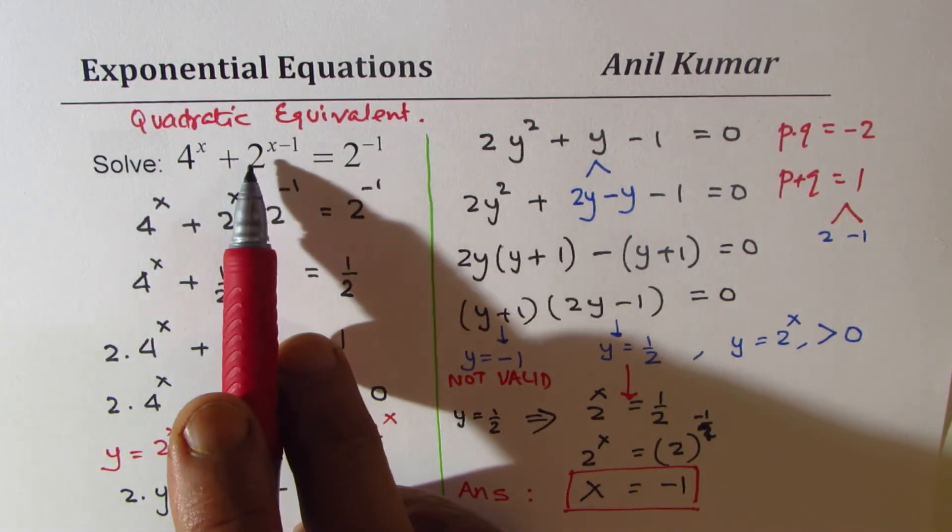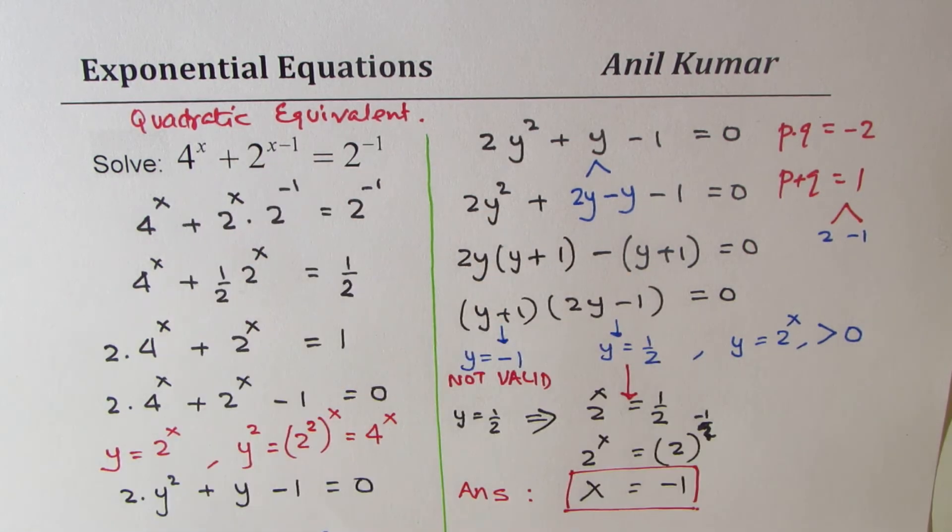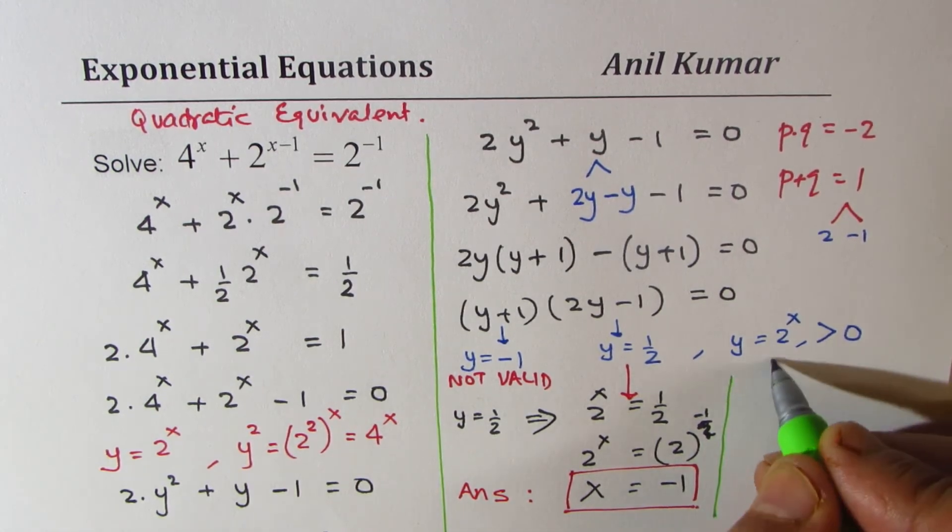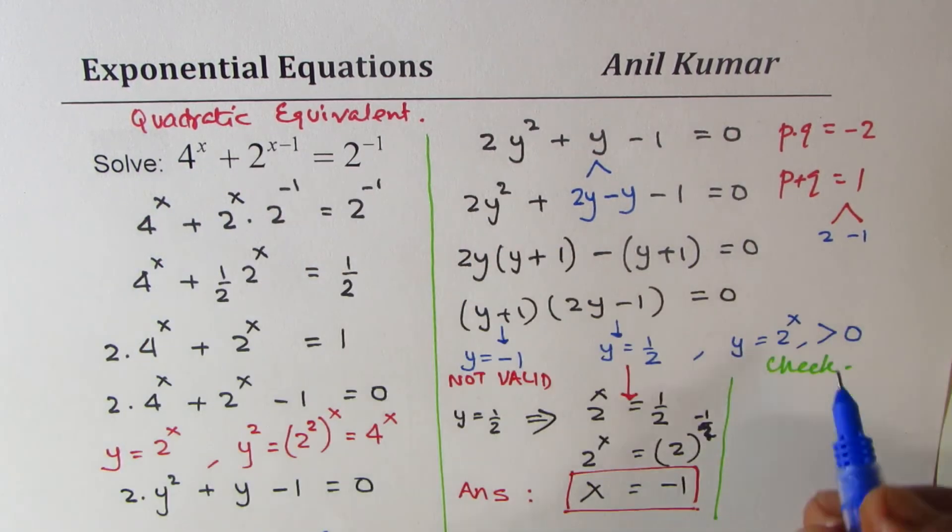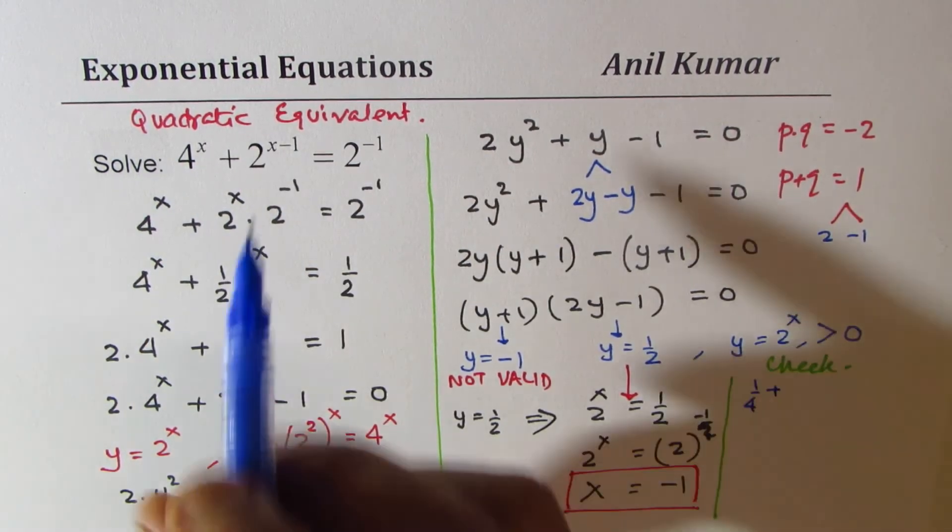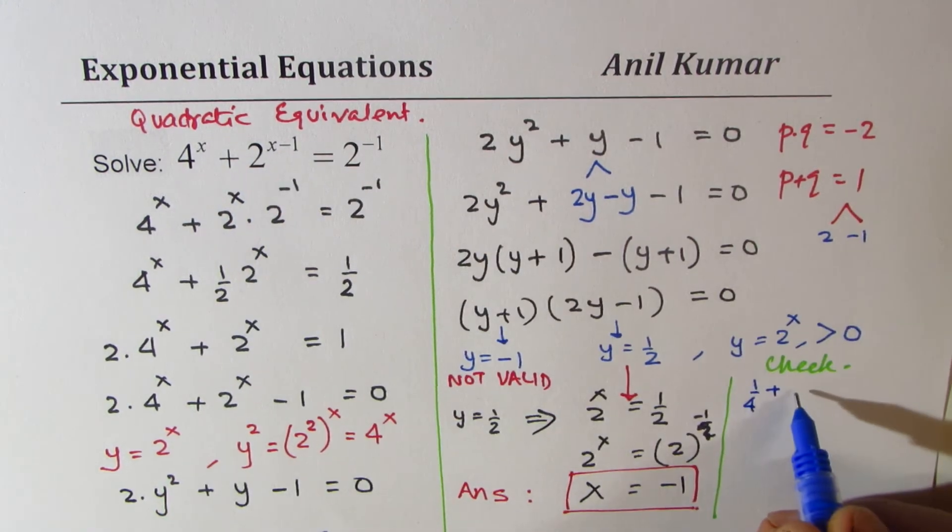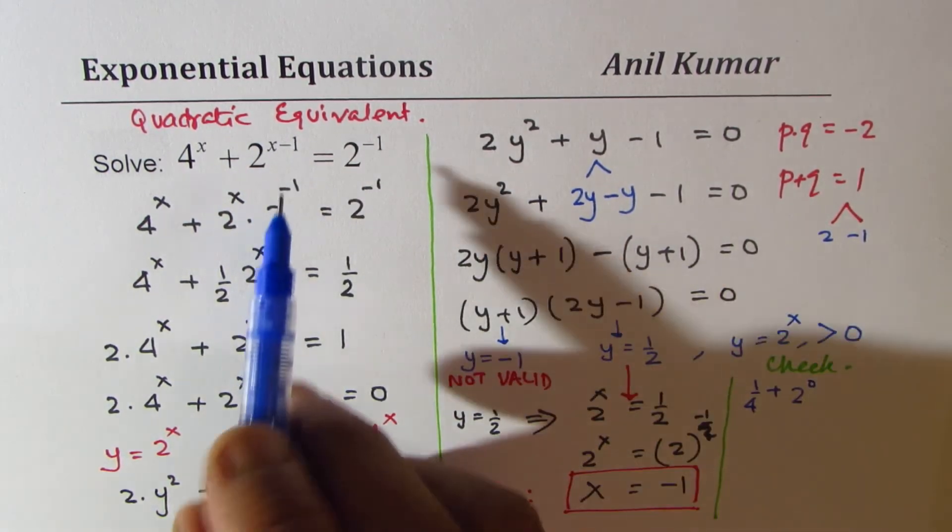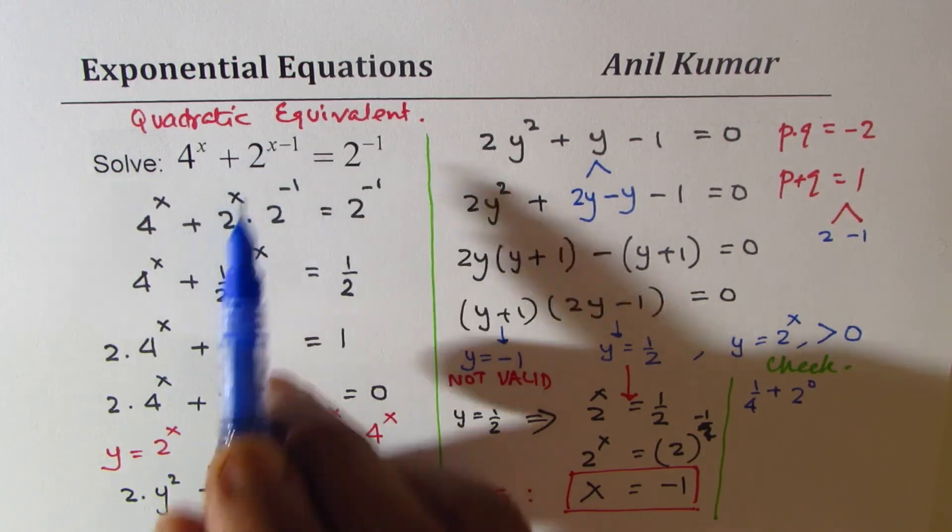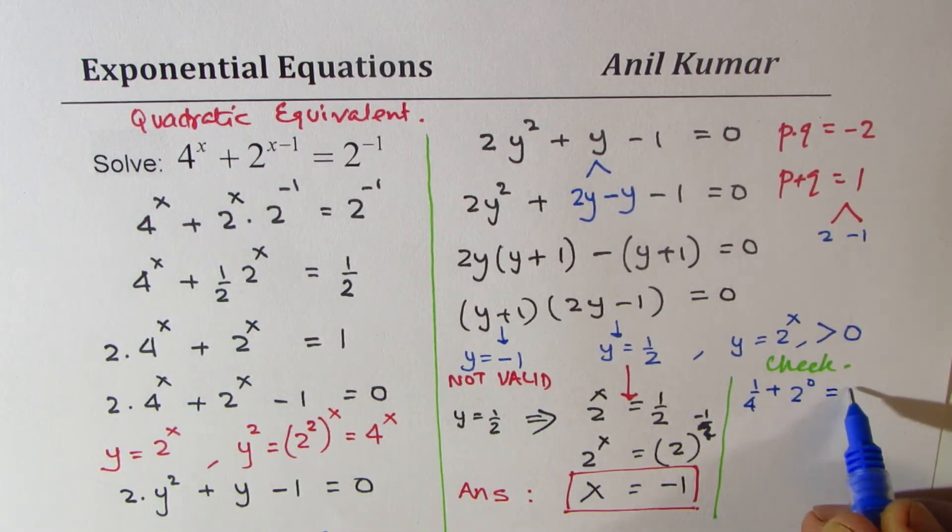You could verify. If I write x equals minus 1, what do I get? So now the question is check. So if I write minus 1 here, I get 1 over 4 plus 2 to the power of 0, which is, this is 1 minus 1, which is 0, equals 1 half.